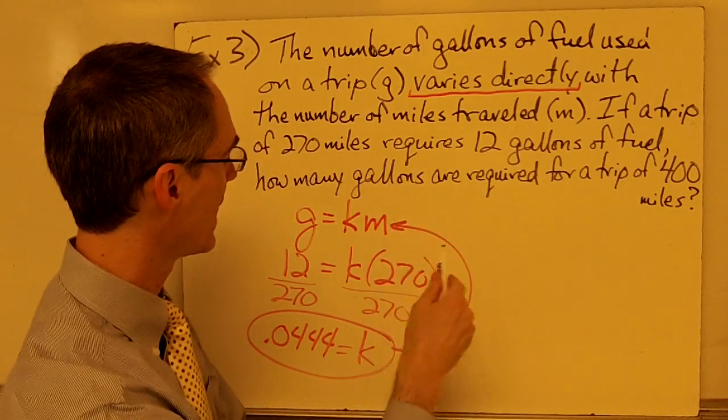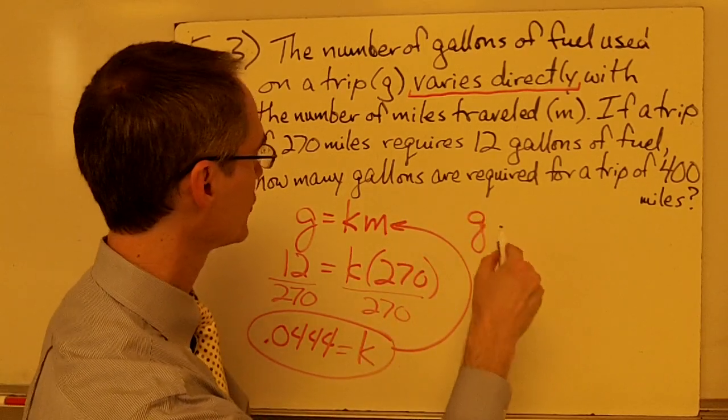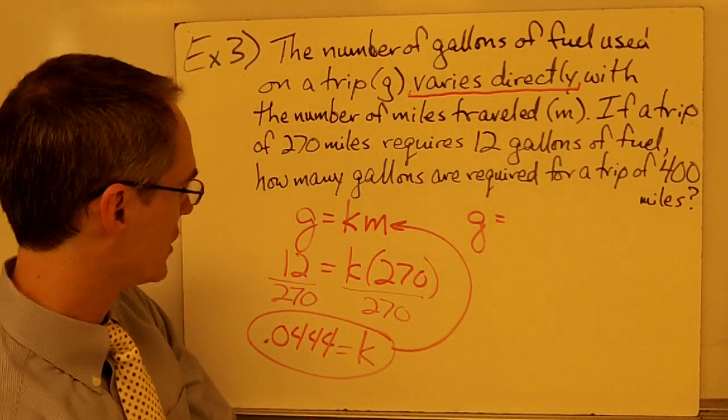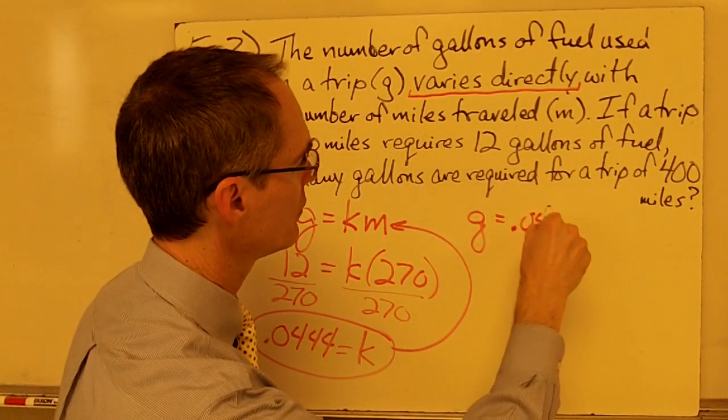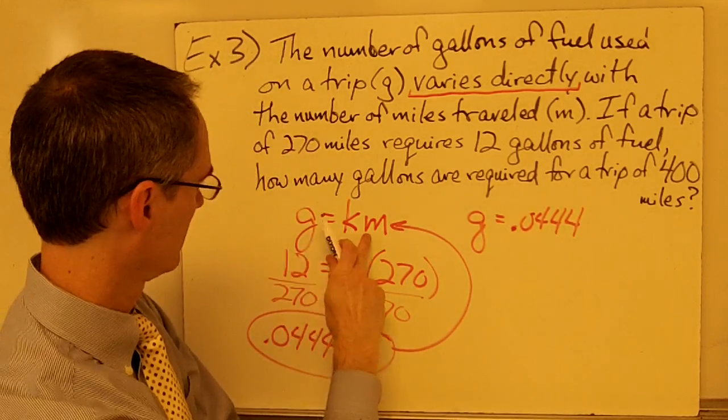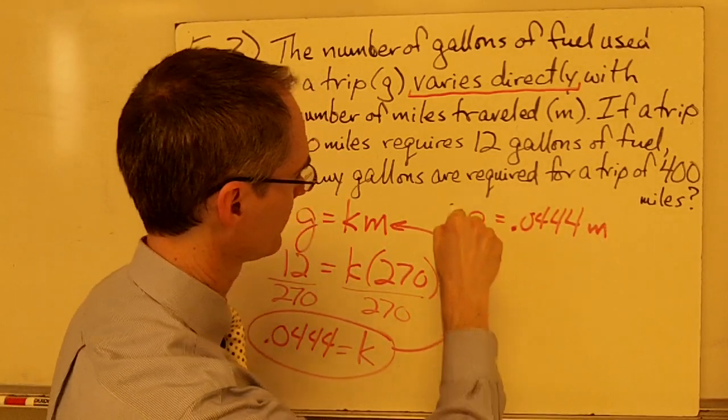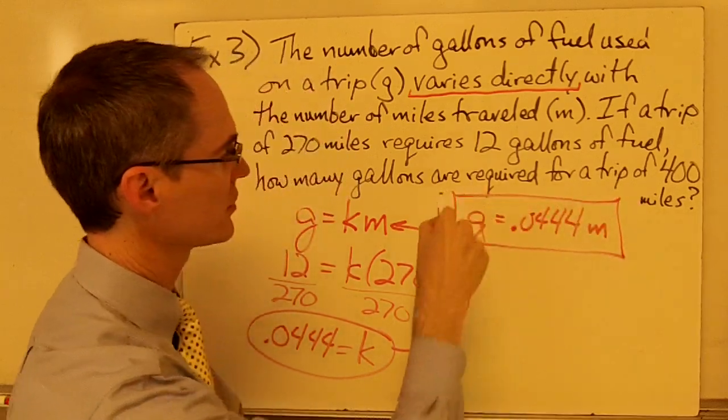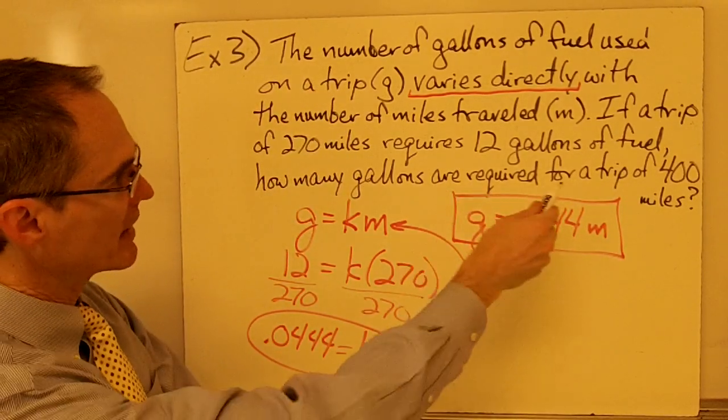I can plug that into my function of variation. So, g equals 0.0444 times m. Here's my function of variation. Now I can answer my question.